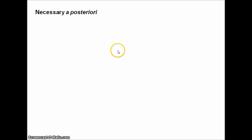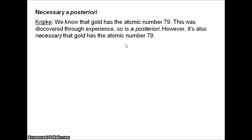Let's consider the necessary a posteriori — statements that are necessarily true, but that we have to rely on experience to come to know. Here's an example from Saul Kripke: we know that gold has the atomic number 79. This is something we discovered through experience — we had to conduct experiments. But it's necessary that gold has the atomic number 79. Anything with that atomic number is gold, even if it doesn't superficially look like gold, and anything with a different atomic number is not gold, even if it looks very much like gold. Gold and the substance with atomic number 79 are identical, so gold necessarily has the atomic number 79.